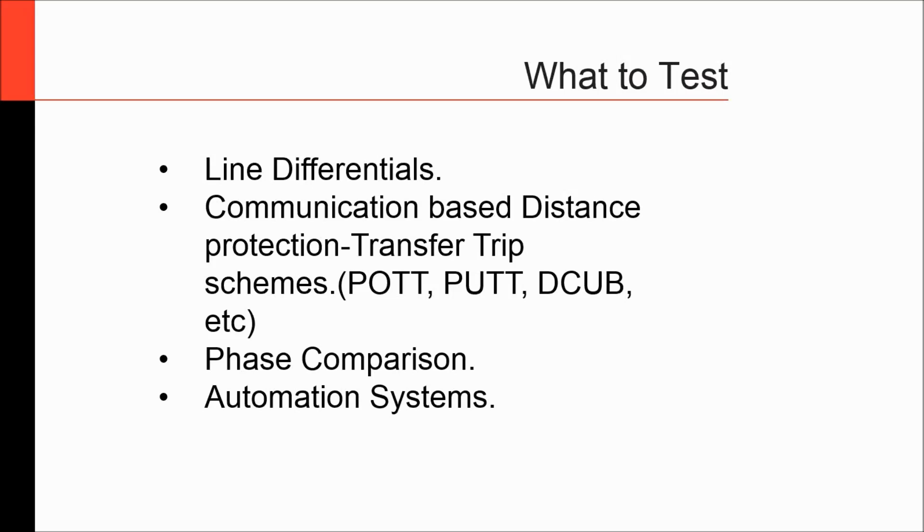What type of protections are tested using end-to-end testing? Line differentials, any communication-based distance protection, transport trip schemes like permissive over reach transfer trip, permissive under reach transfer trip, some sort of phase comparison schemes, some automation systems that work in either transmission lines, even in distribution places where you have remote communications between relays. Those are also schemes that are prone to be tested using end-to-end testing.